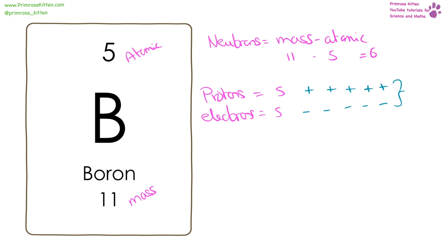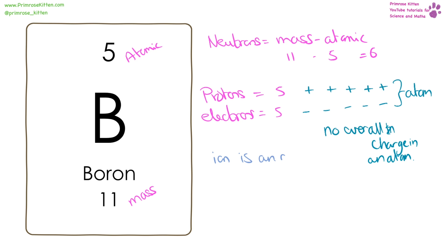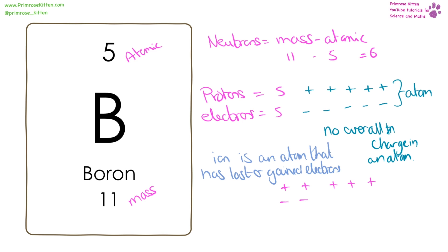An atom, and this is for an atom only, will have the same number of positive and negative charges, which means there is no overall charge. When an atom loses or gains electrons, it no longer has the same number of positive and negative charges, so it becomes charged — it has created an ion.